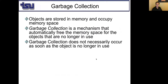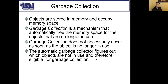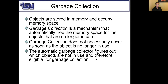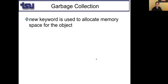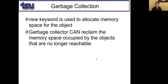Garbage collection does not necessarily happen as soon as an object is no longer in use. It will be marked, but it doesn't mean the garbage collector will work immediately. The garbage collector will figure out which objects are not in use and therefore eligible for garbage collection. It will certainly go to work if there is a danger of running out of memory — at least it will try, if the JVM is available. The new keyword is used to allocate memory space for an object, and the garbage collector can reclaim memory occupied by objects that are no longer reachable.